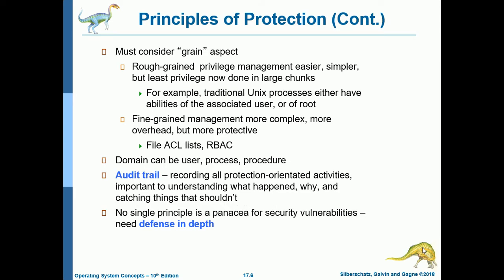We must consider grain concepts. There are two types: coarse-grained and fine-grained. With coarse-grained, privilege management is easier and simpler, but least privilege is done in large chunks. Examples include traditional Unix processes which either have abilities of the associated user or of root. With fine-grained, management is more complex with more overhead, but it is more protective.